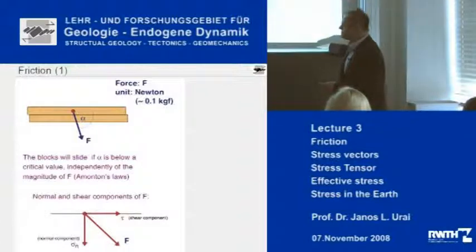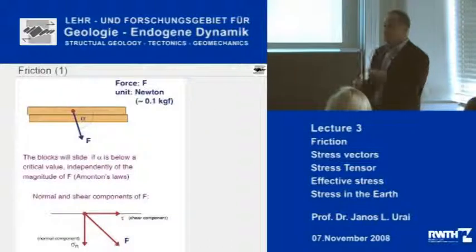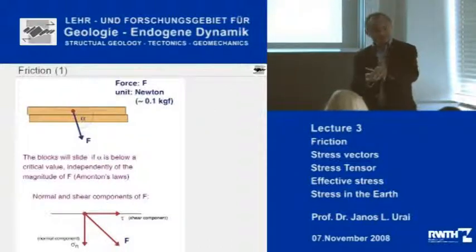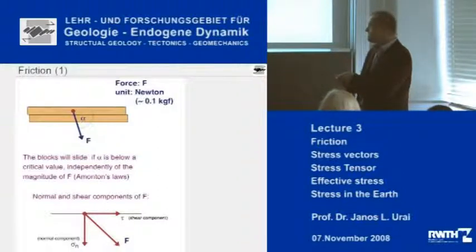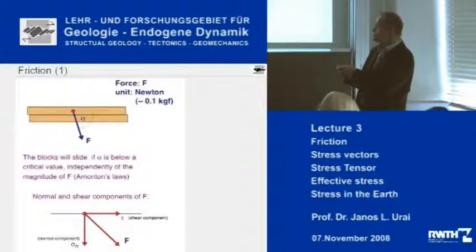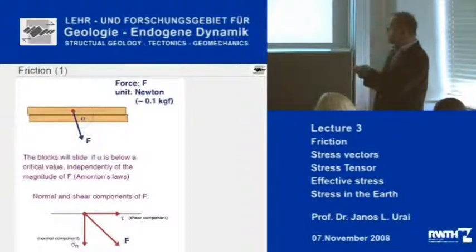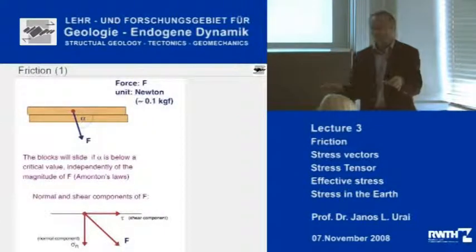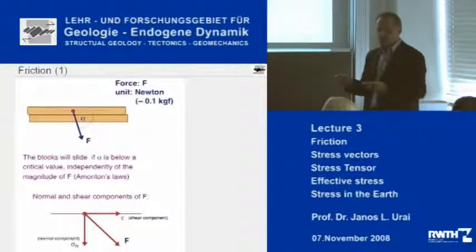This force, divided by the area, becomes the stress vector on the plane. It can be decomposed into a normal component and a shear component. To define whether the two blocks are going to slide, you make a diagram with shear stress tau on one axis and normal stress sigma_n on the other. There is a critical line — the slope of which is the friction angle. If the stress on the plane is below the line, everything is stable. If you are on the line, you start sliding. This part of the diagram is impossible to reach, because the moment you reach the line, you start sliding.